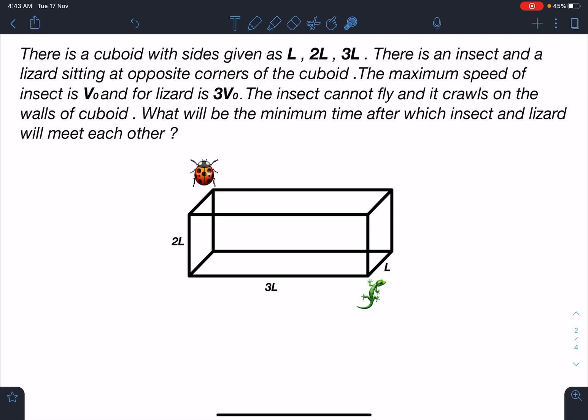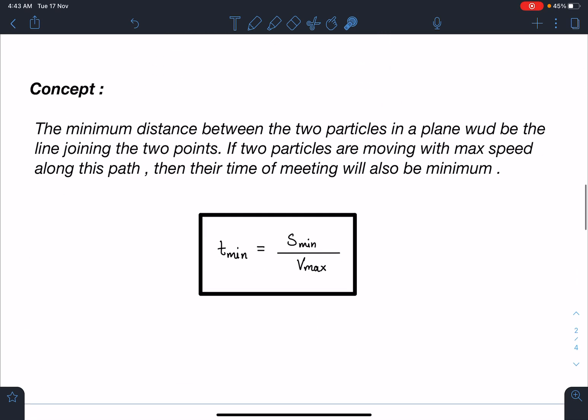Let's discuss the concept here. The minimum distance between two particles in a plane would be the line joining the two points. If two particles are moving with maximum speed along this path, then their time of meeting will be minimum. The straight line joining the two points is going to be the minimum distance. So if particles are moving with their maximum velocities along the line joining these two points in a plane, then that time will be minimum.